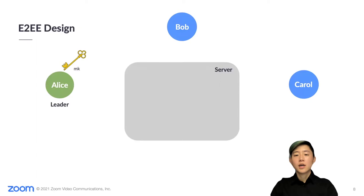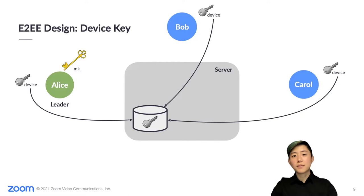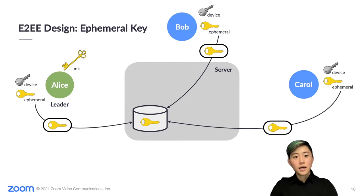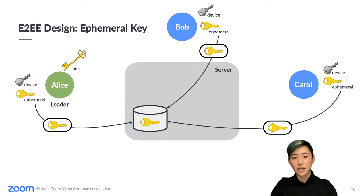We have the meeting leader generate the meeting key to send to each user. We already trust the meeting leader to perform meeting administrative functions. Each user has a long-term per-device signing key pair, where the private key never leaves the device. The user posts their device public key to the server, which stores a directory of user IDs and device public keys. Then, for each meeting, the user generates a new ephemeral encryption key pair, signs the ephemeral public key along with some meeting-specific context using the device secret key, and shares this signed binding with everyone in the meeting.